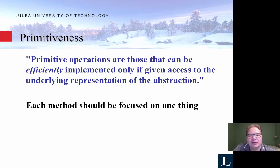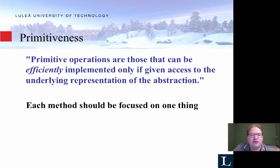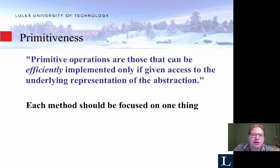Primitiveness has to do with functions or methods. Make sure that you can understand what a method is doing by its name and signature. Primitive operations are those that can be efficiently implemented only if given access to the underlying representation of an abstraction. Basically a method should be focused on one thing — don't do methods called 'fixing stuff', because for another developer reading the code it's very difficult to understand what it does. Come up with good names for your methods, make sure you're doing one thing, and comment them properly.